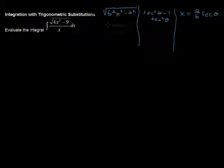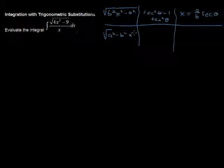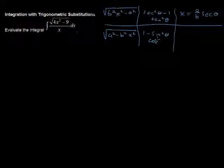On the other hand, if we see the form square root of a squared minus b squared x squared — a reverse of that subtraction — then you can think of this identity: 1 minus sine squared of theta equals cosine squared of theta. In that case, we'll let x equal to a over b times sine of theta.